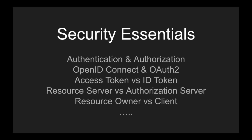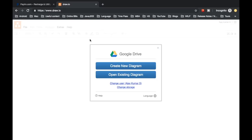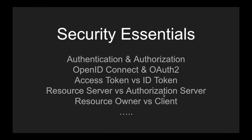The next terms are resource server and authorization server. In the Draw.io example, Draw.io is the resource server — it holds a resource, this website where you access something. Google is the authentication and authorization server — Google authorized me to allow access to Google Drive. So the authorization server is where you have usernames, passwords, roles, grants, and scopes. If you're building applications, the authorization server is typically a central authentication mechanism in your company.